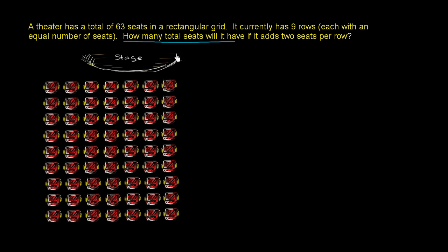So what we want to figure out is the total number of seats. Let's say that the total is going to be equal to the number of seats that the theater already has. They tell us that they have 63 seats in a rectangular grid.